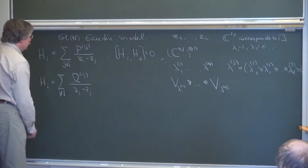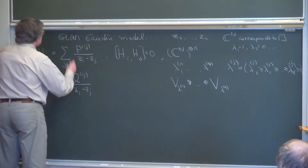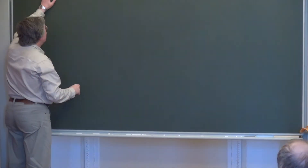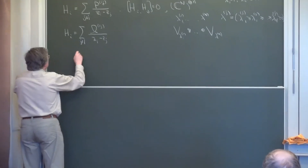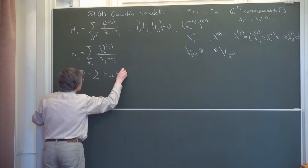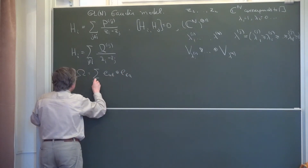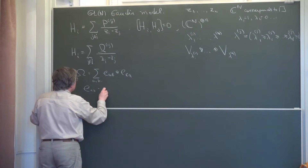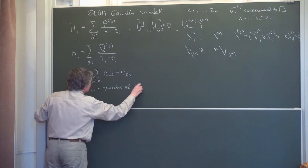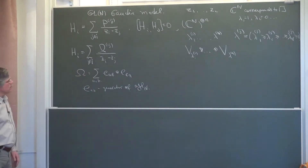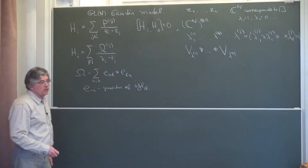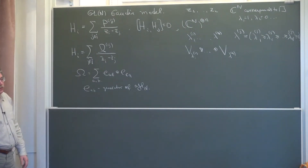Instead of the permutations in the simpler case, the Gaudin operators and Gaudin Hamiltonians will have a somewhat more complicated two-factor part, where omega is the invariant tensor. Written in standard generators it looks like that. Again, these Gaudin Hamiltonians commute — this is a commutative family of operators.